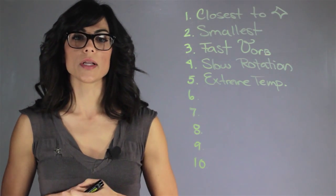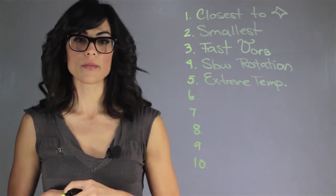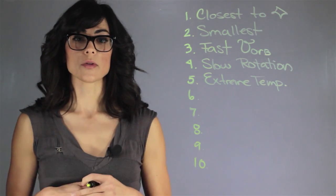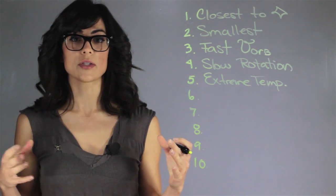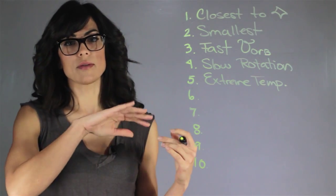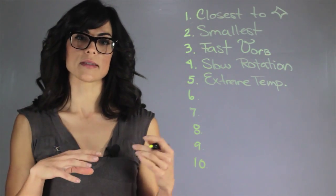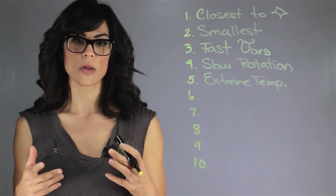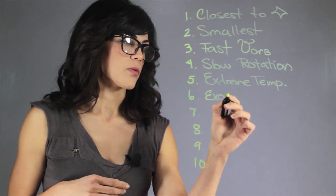Now the other thing is that it doesn't really have an atmosphere. It has something called an exosphere which means that it doesn't have enough gravitational pull to keep the gases near the surface. You can find a little bit of traces of gases but it's not dense enough to be called an atmosphere. So exosphere.